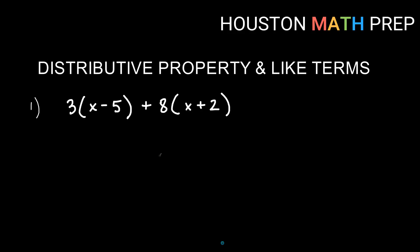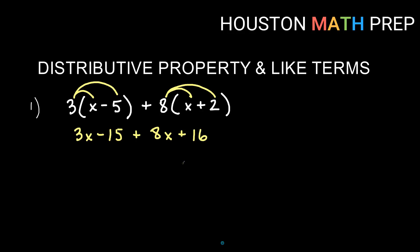Let's look at a few examples — first distribute, then combine like terms. For the distributive property, we take the 3 and distribute that multiplication into each term in the parentheses: 3 times x gives us 3x, and 3 times negative 5 gives us negative 15. Then distributing the 8: 8 times x gives 8x, and 8 times 2 gives 16. We end up with four terms; combining the x terms: 3x plus 8x gives us 11x.